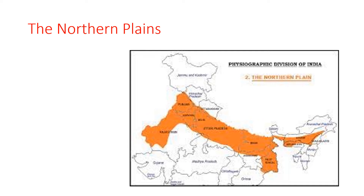The Indo-Gangetic Plains are also known as the Northern Plains — underline it. These Northern Plains are one of the most fertile plains of the world. The Northern Plains lie between the Himalayas and the Southern Plateau.